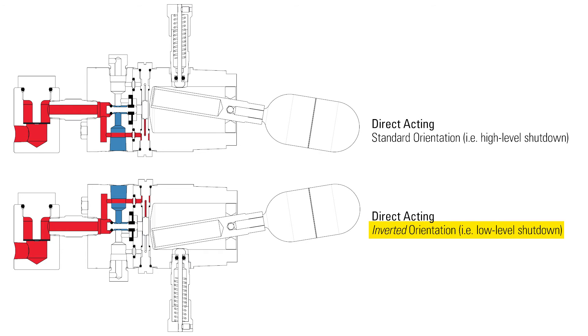If you are installing it for a low level shutdown, you will want to install it upside down with the button on the bottom and keep it in the direct acting mode. This will keep the test button functional and allow the switch to signal a valve only when the level gets low enough for the float to drop.